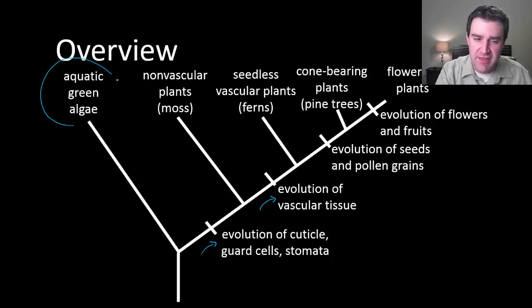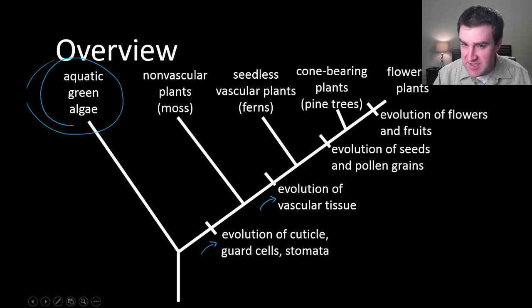We'll see that green algae are thought to be related to modern plants but are not plants themselves. They still live in aquatic environments, so we'll see what was required to help plants exist on land in the first place and what happened after that that helped them to succeed more and more.